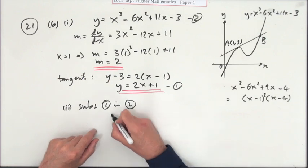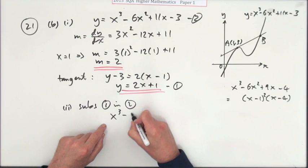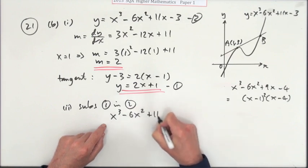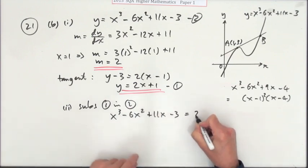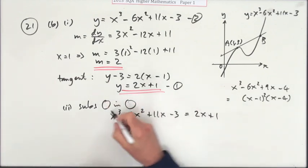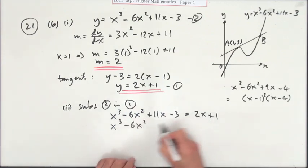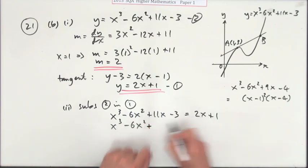So substituting that into this would give you - I've actually written equation 2 into equation 1, but I'm going to write it the other way around: x³ - 6x² + 11x - 3 = 2x + 1.